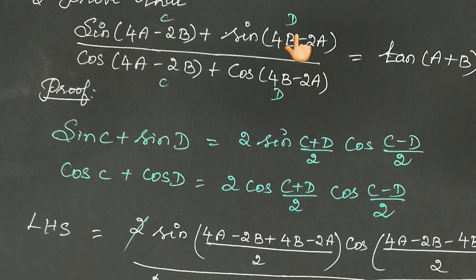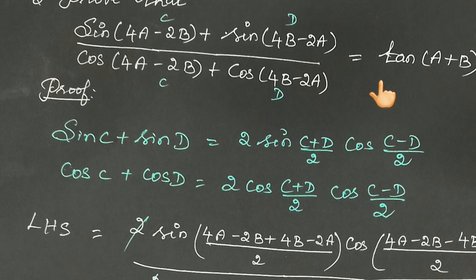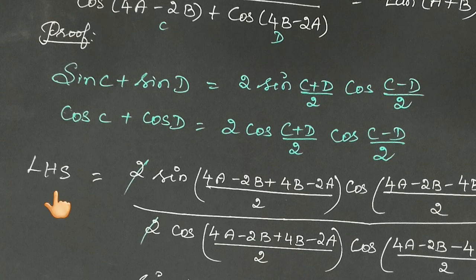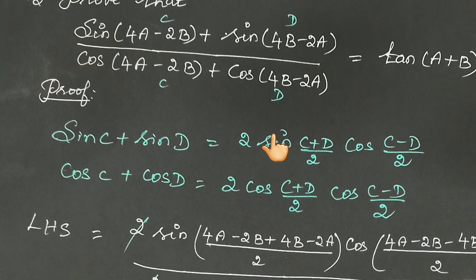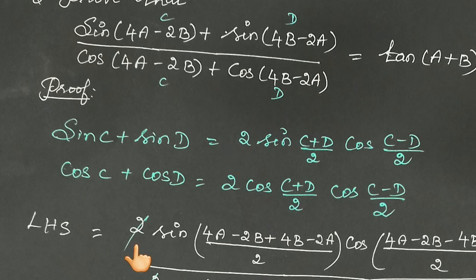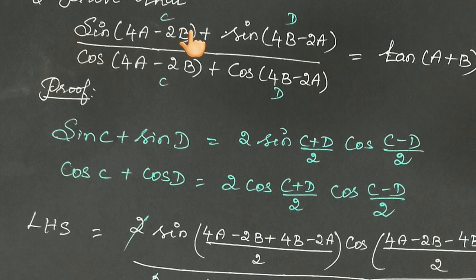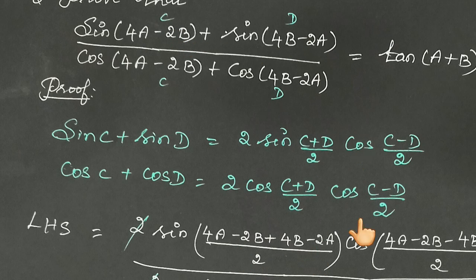Now identify which is C and which is D. Apply the identity to the left hand side. In the numerator, apply 2 sin of (C plus D) by 2 — so here, C plus D gives 4a minus 2b plus 4b minus 2a — the whole thing divided by 2, into cos of (C minus D) by 2.